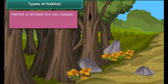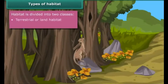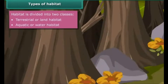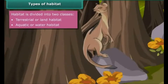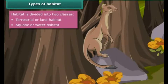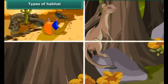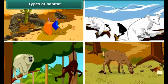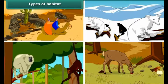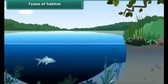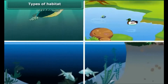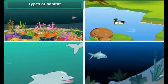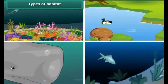The first is terrestrial or land habitat, and the second is aquatic or water habitat. Habitat of living organisms found on land is terrestrial habitat. Desert, mountains, forest, and grasslands are examples of this category. Whereas habitat of living organisms found in water is aquatic habitat — sea, ponds, oceans, and lakes are examples of this category.